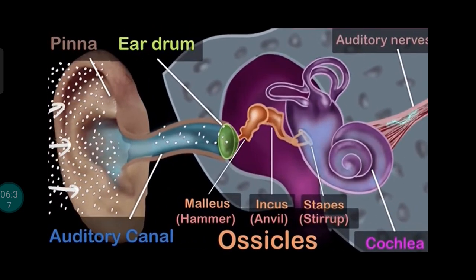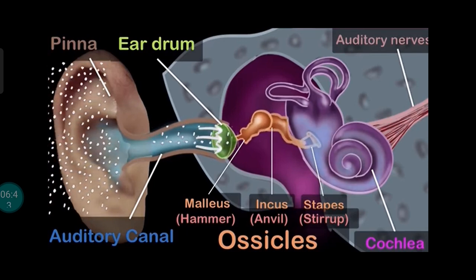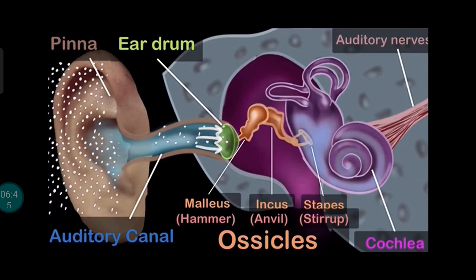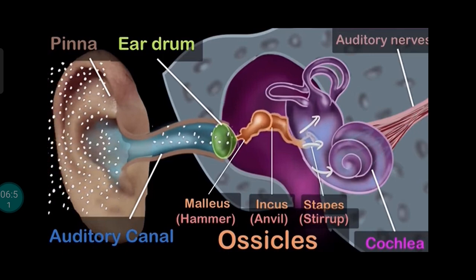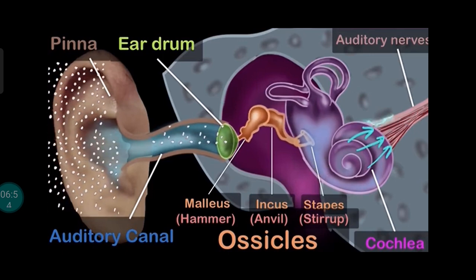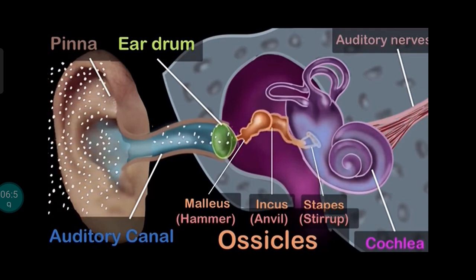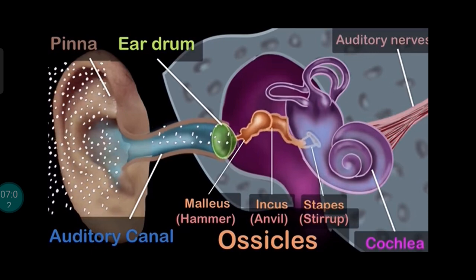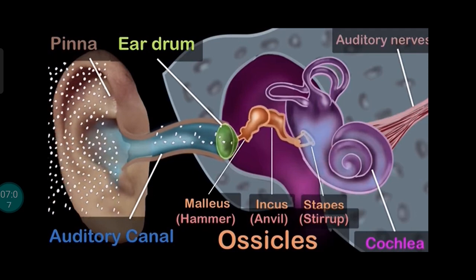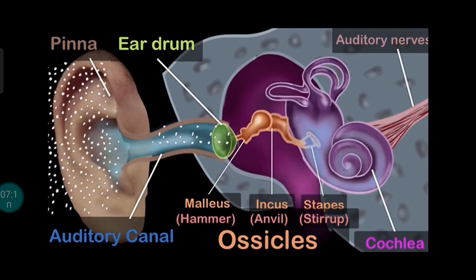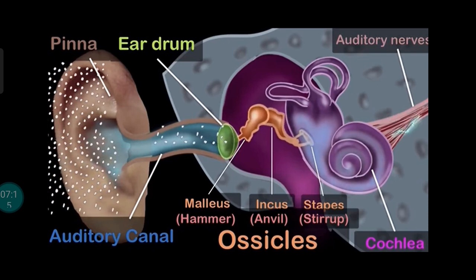To summarize: the outer ear collects the sound waves through the pinna and directs them to the eardrum. The three ossicle bones of the middle ear amplify these sound waves, transferring them into the cochlea. The cochlea converts the back-and-forth vibrations of the particles into electrical signals and sends them to our brain. And regardless of how many words I use to describe what's going on, the very fact that the back-and-forth movement of air can be converted into this amazing experience we call sound is truly unfathomable and beyond words.